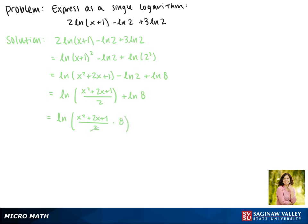Now the 2 cancels with the 8 to leave us with 4 times this whole quantity. Distributing that to each term gives us the natural log of 4x squared plus 8x plus 4.